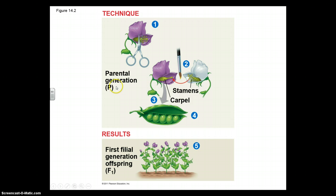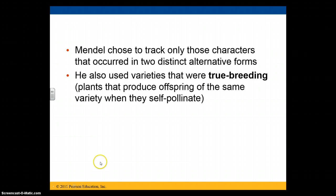You start with the parent generation, always referred to as the P generation. The result of the cross between the parent generation gives you your first generation, or the F1 generation. Mendel chose to track only those characters that had two distinct alternative forms, which simplified the process — much like you simplify an experiment by modifying only one variable at a time — so he was able to analyze and make sense of his data.